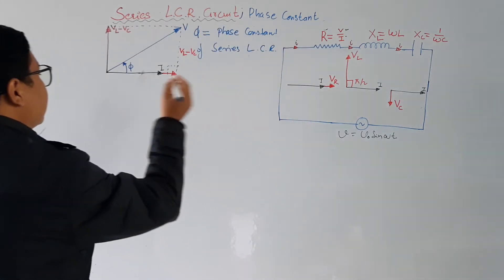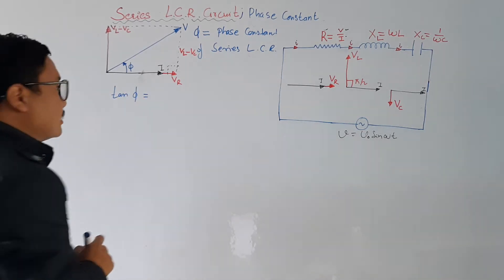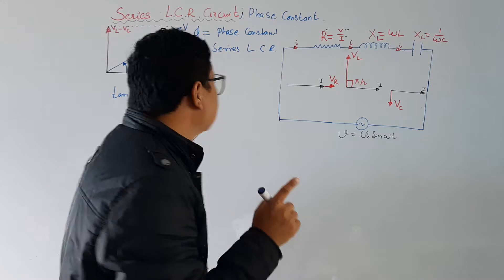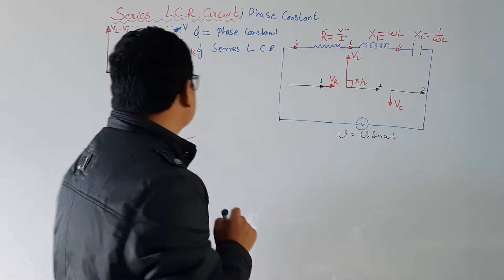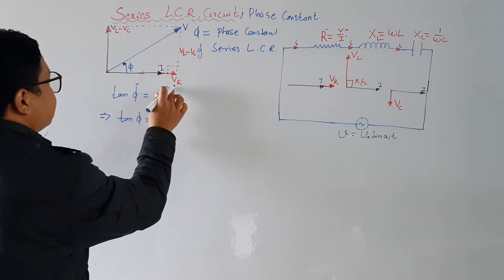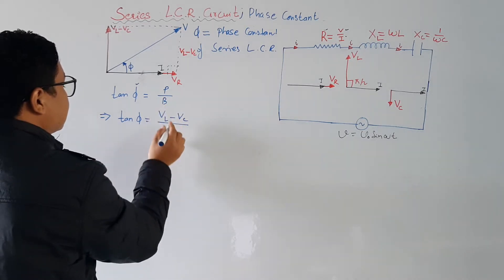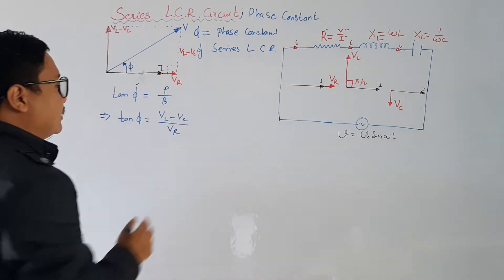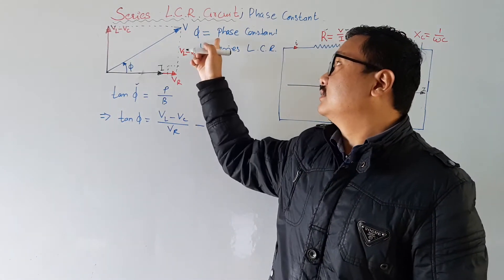To find the phase constant, we are going to use tan φ equal to something using a trigonometric ratio. From this we can find the value of φ. We know that tan is equal to perpendicular divided by base, so tan φ will be equal to VL minus VC divided by VR, where VR is the base.